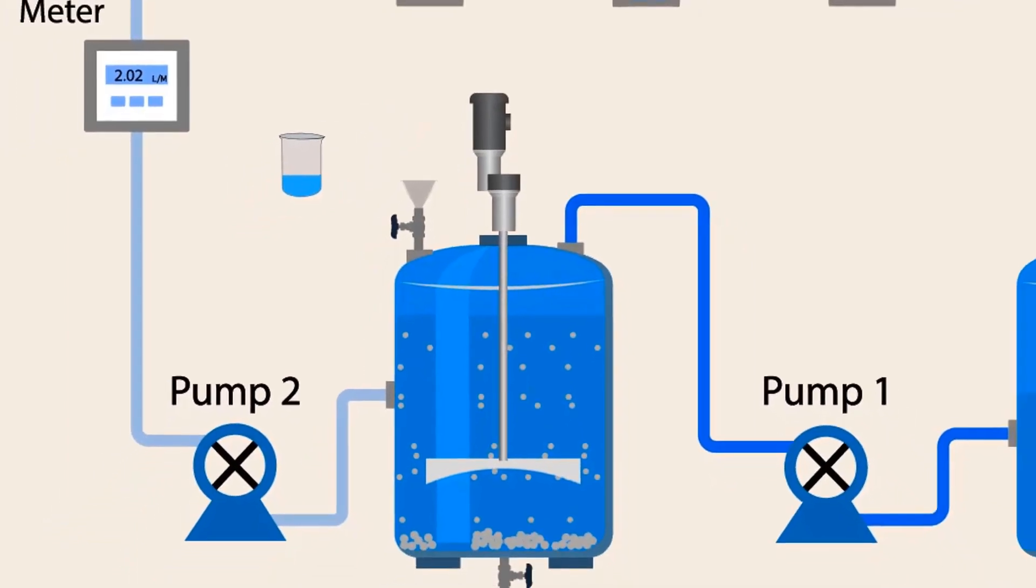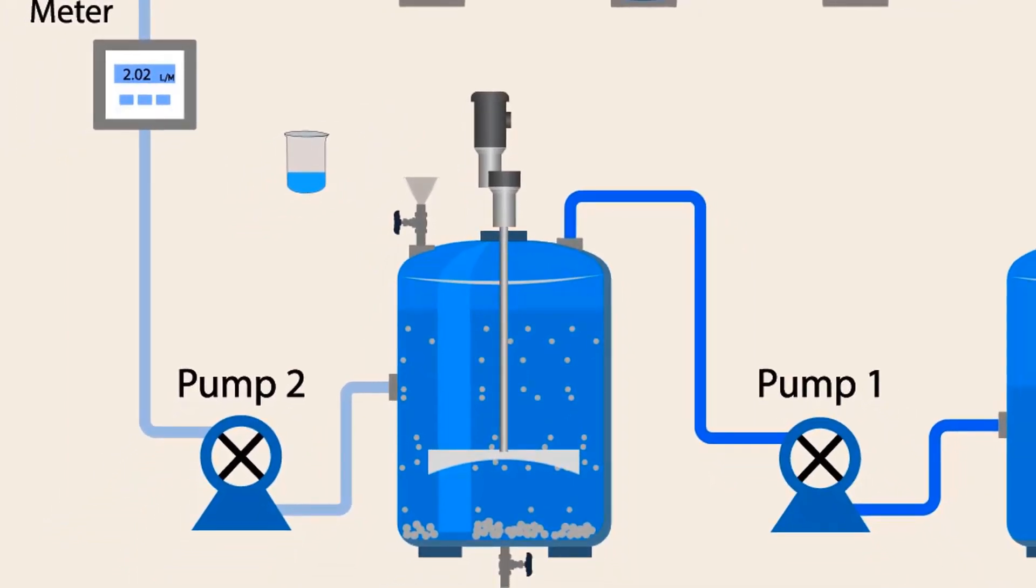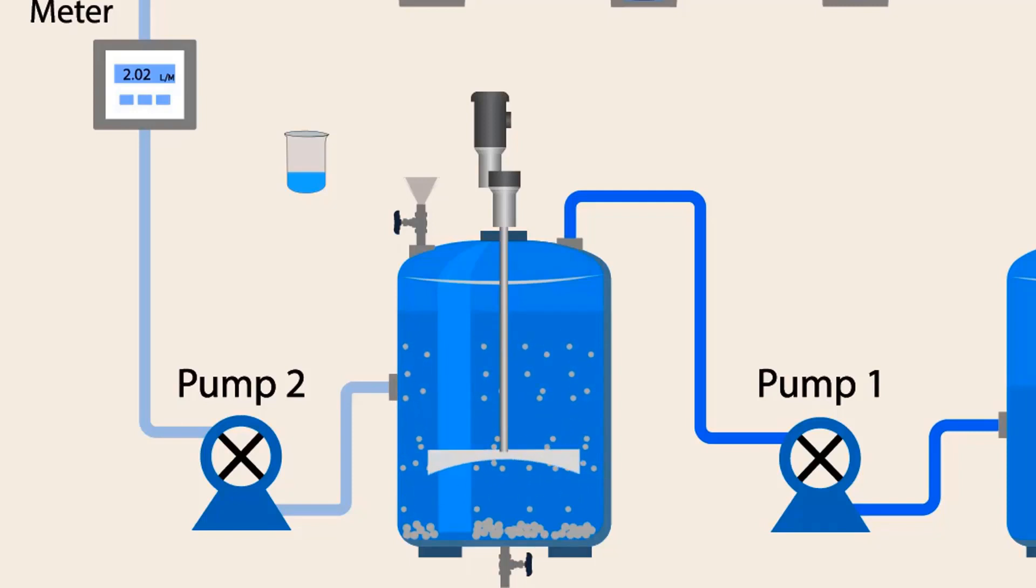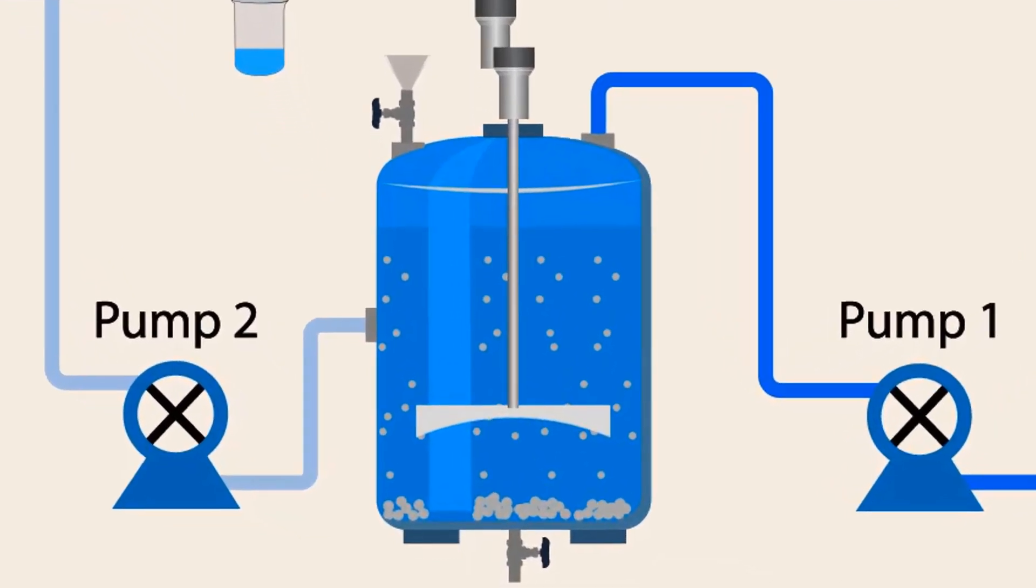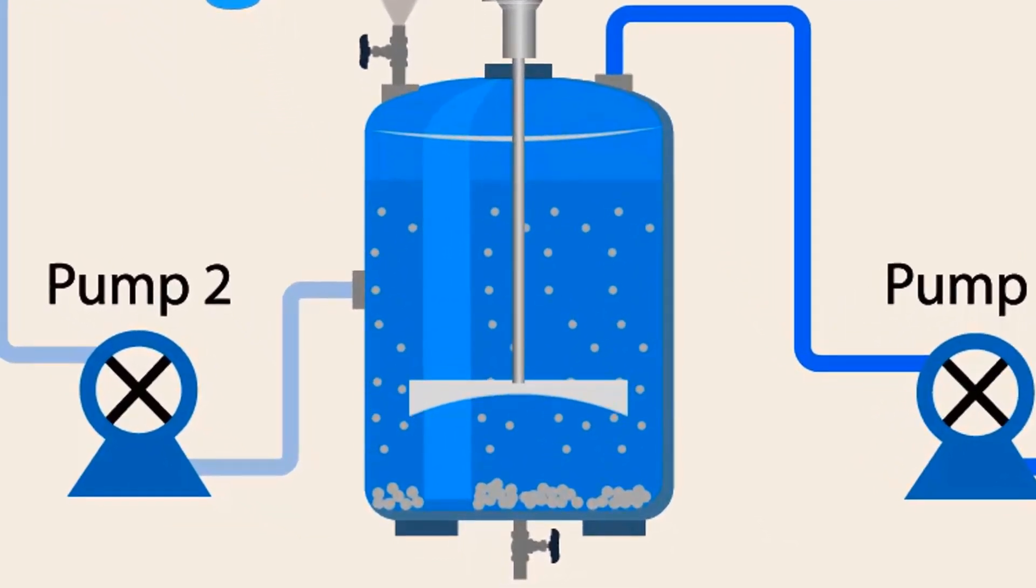After adding the coagulant, we need to turn on stirrer in order to mix aluminum sulfate in the water homogeneously. After some time, turn off the stirrer. When we stop stirrer, particles will make flocks. And due to the formation of flocks it settles down quickly.